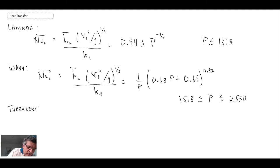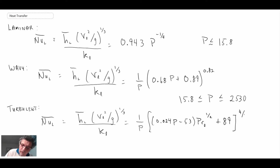Finally, we have turbulent. Just like we saw in the previous segment when we got the turbulent, it included the Prandtl number. This applies if P is greater than 25.30, and it also applies for Prandtl number of the liquid greater than or equal to 1.